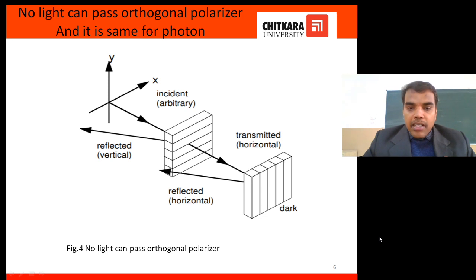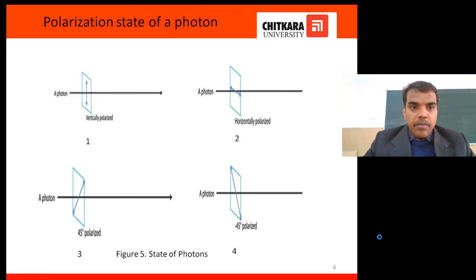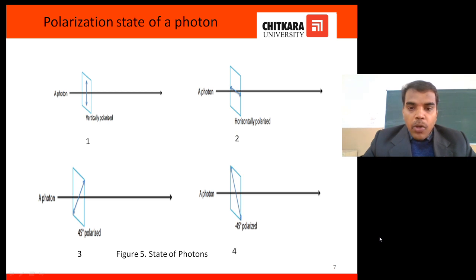Whenever we put horizontal and vertical polarizers together, they filter all light — no photons can travel further. This is the basic principle behind the brightness control of our laptops and LCDs. We have four polarized states: vertically polarized, horizontally polarized, 45-degree polarized, and minus 45-degree polarized — these are all four states of photons.